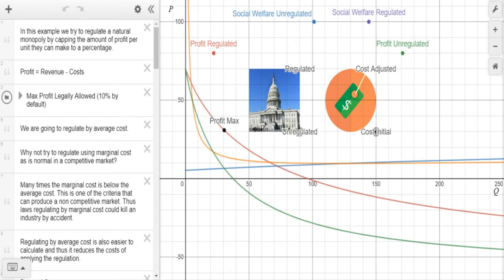Remember that profit equals revenue minus cost. By default, we're going to have a max legally allowed profit of 10%, and we're going to try to regulate by average costs.